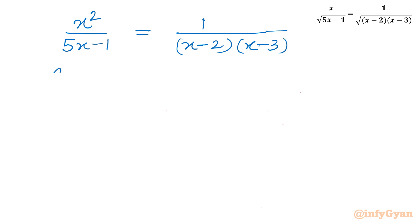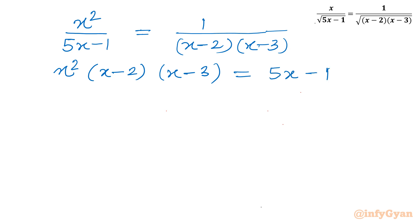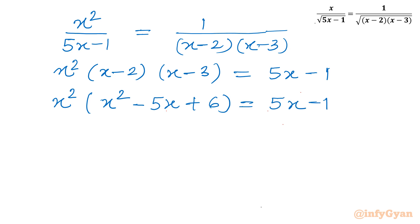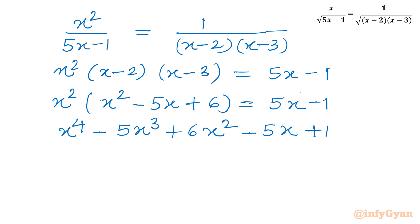Now I will cross multiply. So x squared times (x minus 2)(x minus 3) equals 5x minus 1. Taking the product of (x minus 2)(x minus 3) gives x squared minus 5x plus 6. On the right side it is 5x minus 1. Expanding gives x to the power 4 minus 5x cubed plus 6x squared, and taking this term to the LHS gives minus 5x plus 1 equal to 0.